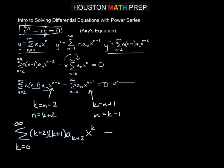For the second series, since n starts at 0 and k equals n plus 1, this starts at k equals 1 to infinity. So a sub n becomes a sub k minus 1, and x to the n plus 1 becomes x to the k, all equal to 0.